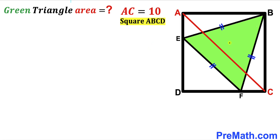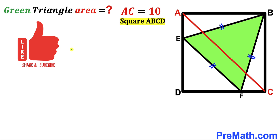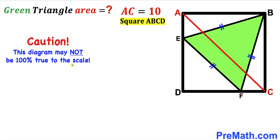Welcome to PreMath. In this video we have got this green shaded equilateral triangle EBF fully confined in a square ABCD, as you can see in this diagram, such that this diagonal AC of this square is 10 units. Our task is to calculate the area of this green shaded triangle EBF. Please don't forget to give a thumbs up and subscribe, and keep in mind that this figure may not be 100% true to the scale.